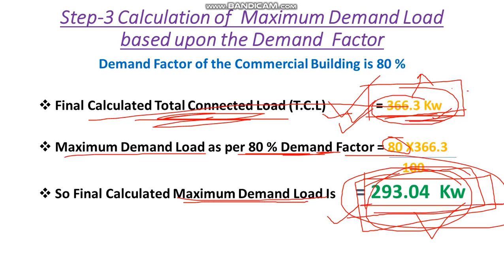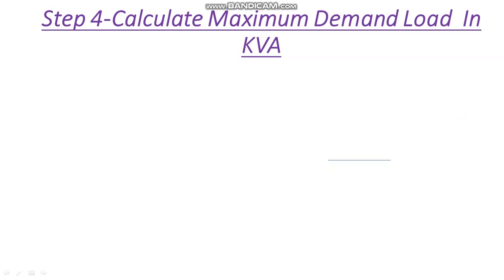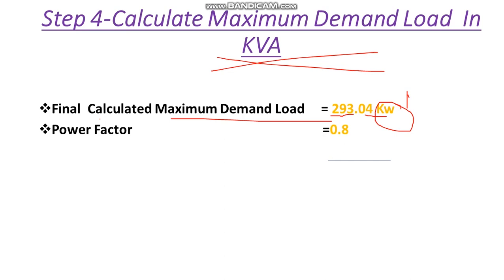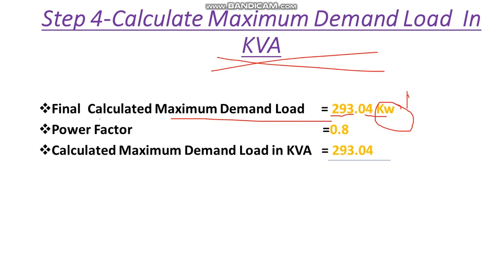In Step 4 we are going to convert kilowatts into kVA. Our maximum demand load is 293.04 kW, which is active power. To convert it to kVA we simply divide by the power factor, which here is 0.8. So 293.04 ÷ 0.8 = 366.3 kVA. This is our maximum demand in kVA.